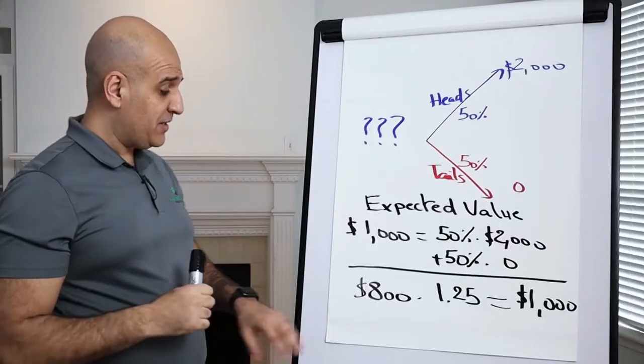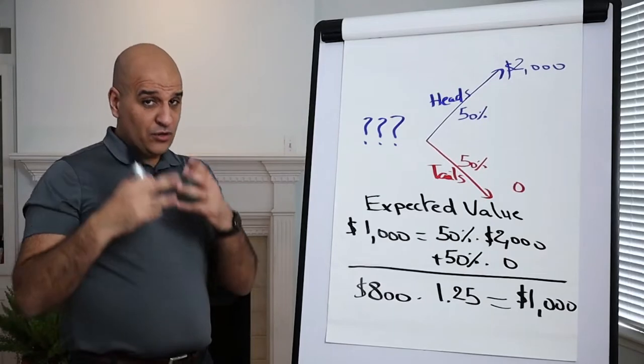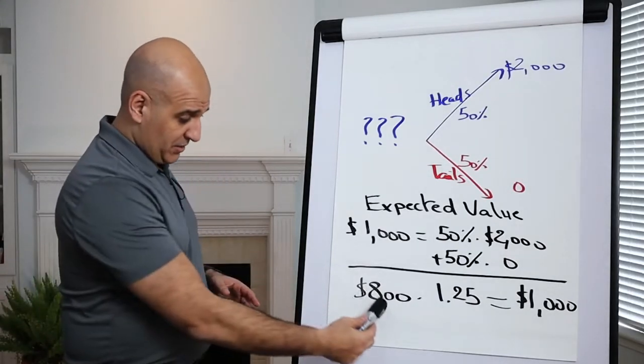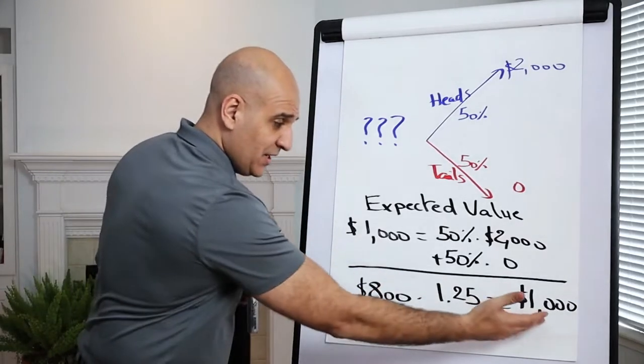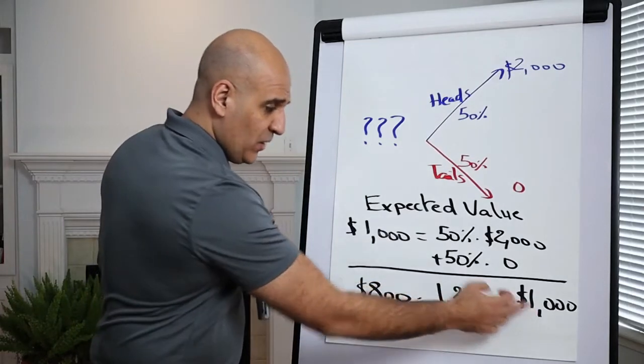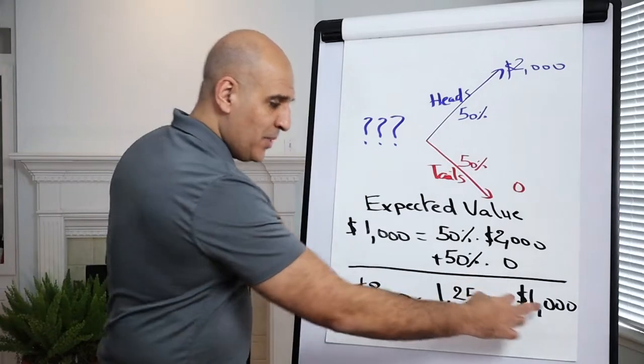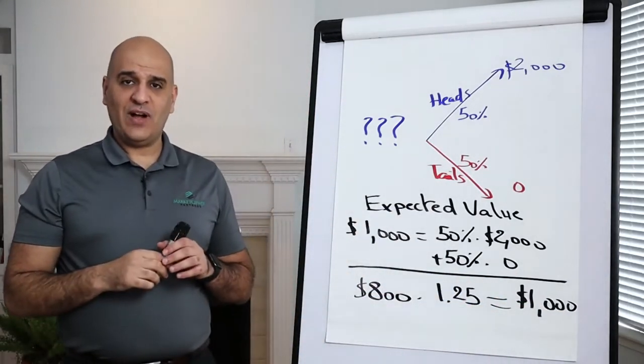Well, the math of it is actually very simple. It will be $800. In order to make 25% of $800, that's $200. $200 plus $800 gets us to $1,000. So, $800 times 1.25 is $1,000. In another way, you could get to $800 by taking the $1,000 divided by 1.25.